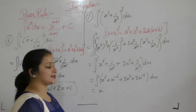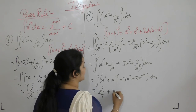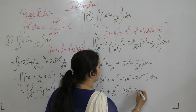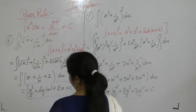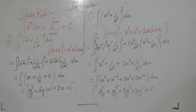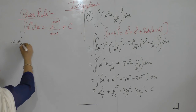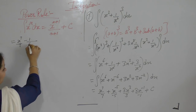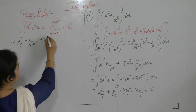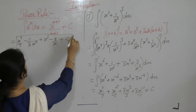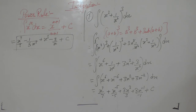Applying the power rule to each term of the expansion: exponent 6+1 = 7, exponent -6+1 = -5, exponent 2+1 = 3, exponent -2+1 = -1. So the final answer is x⁷/7 - (1/5)x⁵ + x³ - 3/x + C.